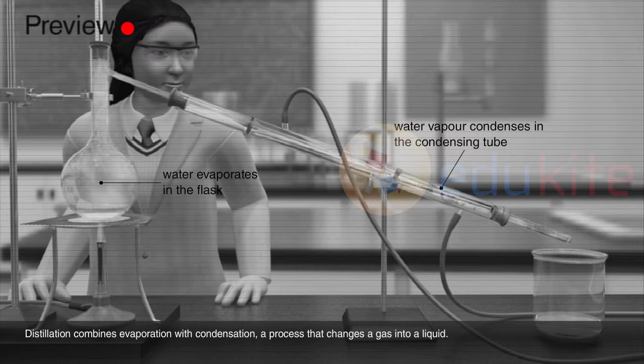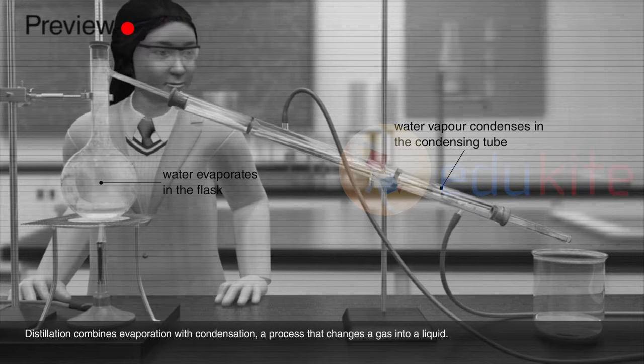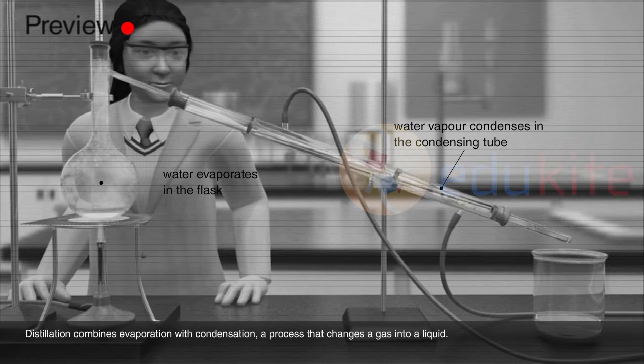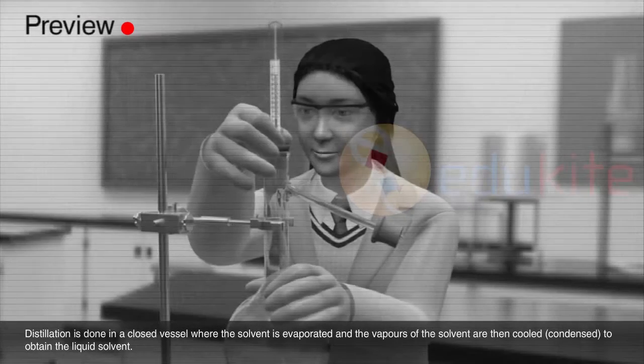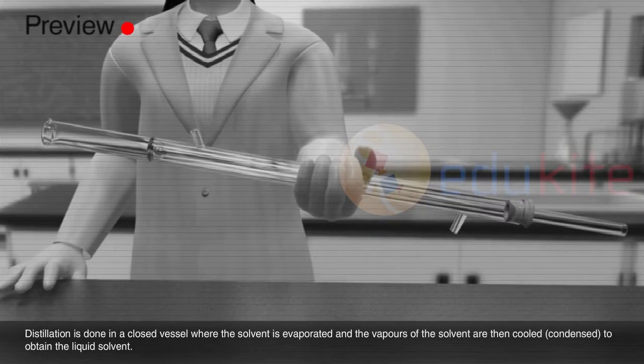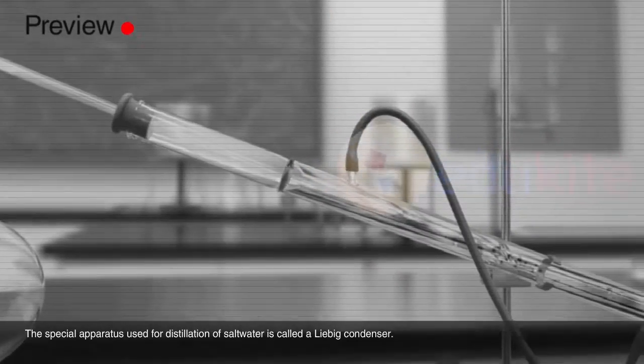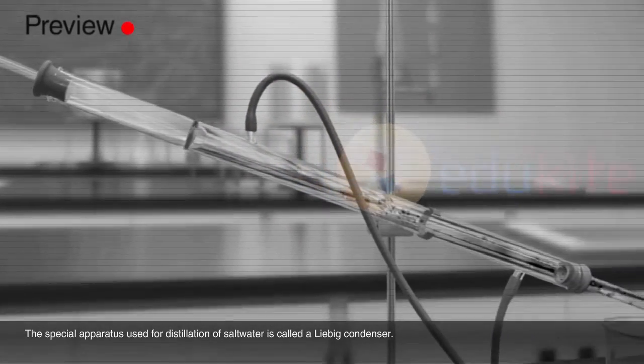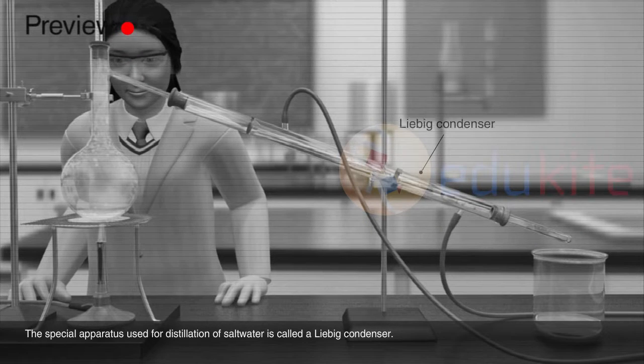Distillation combines evaporation with condensation, a process that changes a gas into a liquid. Distillation is done in a closed vessel where the solvent is evaporated and the vapors of the solvent are then cooled or condensed to obtain the liquid solvent. The special apparatus used for distillation of salt water is called a Liebig condenser.